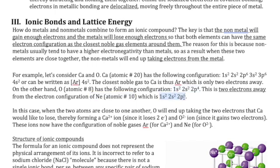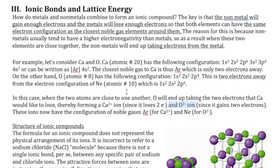Neon's configuration requires two additional electrons to be gained by oxygen. When calcium gives away its two electrons and oxygen is nearby, oxygen will gain the two electrons, resulting in a Ca²⁺ ion and an oxide ion, O²⁻. Once those two form, they can have the strong electrostatic attraction that results in the ionic bond.